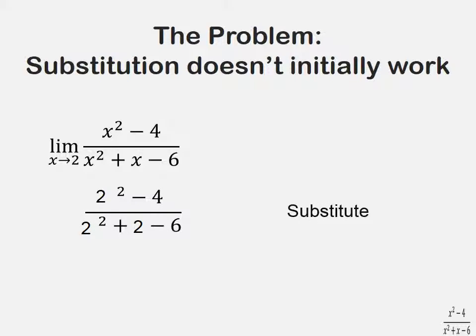We plug 2 in for x and get 2 squared minus 4 over 2 squared plus 2 minus 6. This simplifies to 0 over 0, which is an indeterminate. Substitution didn't work this time, so we can try another method.